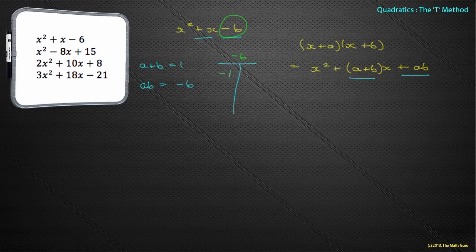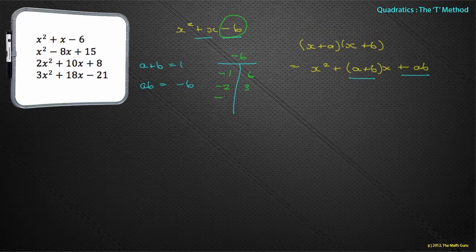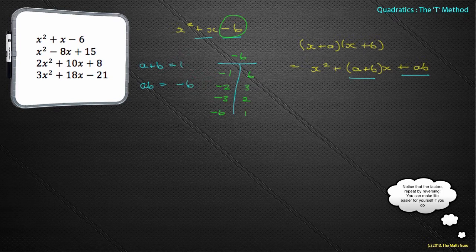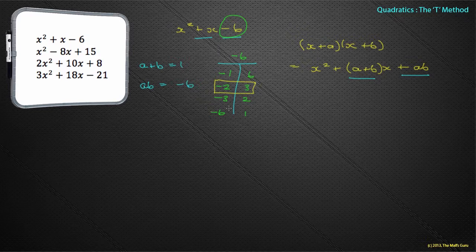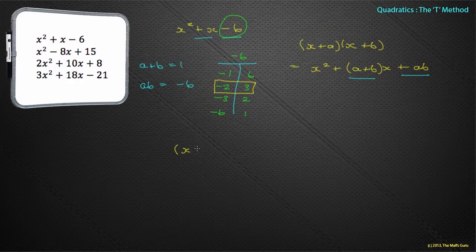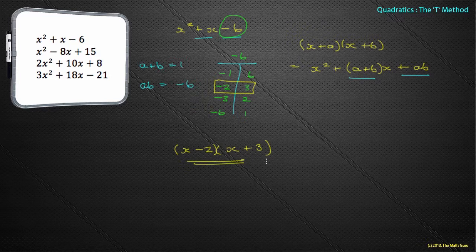So I have -1 and 6, -2 and 3, -3 and 2, and -6 and 1. Now which pair of these adds to give 1? There is only one of them, and that's this one here. And so I can go pretty much straight away to say that a is -2 and b is 3. And there we have our factorized form: (x - 2)(x + 3). Seems pretty funky to me.